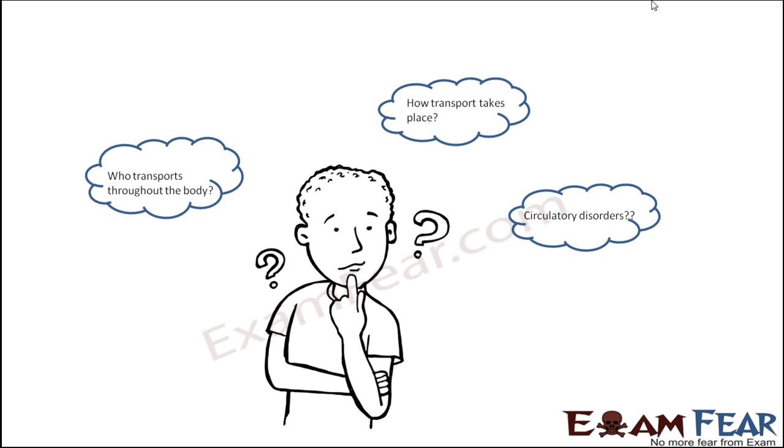This entire lesson I have divided into different sections. In the first section, we will talk about the circulatory system in animals, and in that too we will primarily discuss about human beings because that is something which is most easy for you to understand. Then we will talk about circulatory system in plants also, and we will spend some time understanding other systems which are also transportation systems.